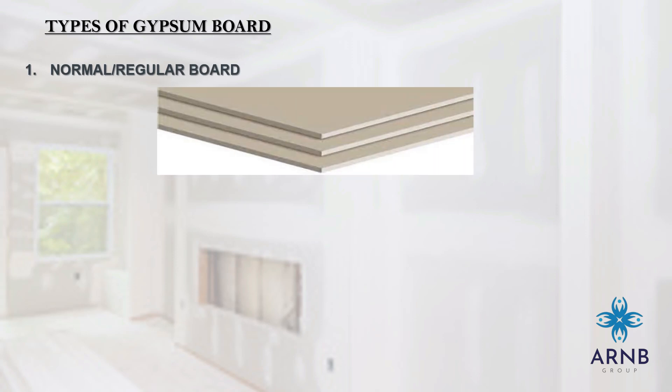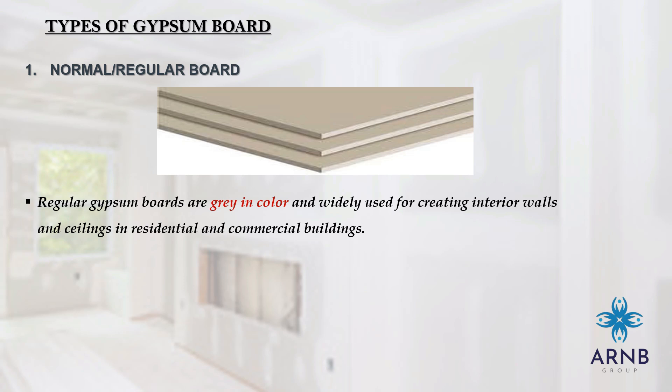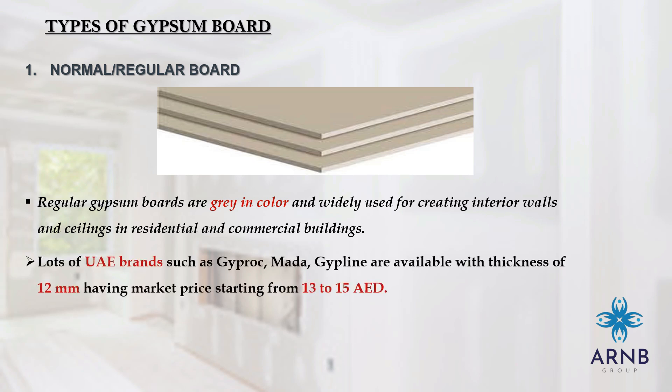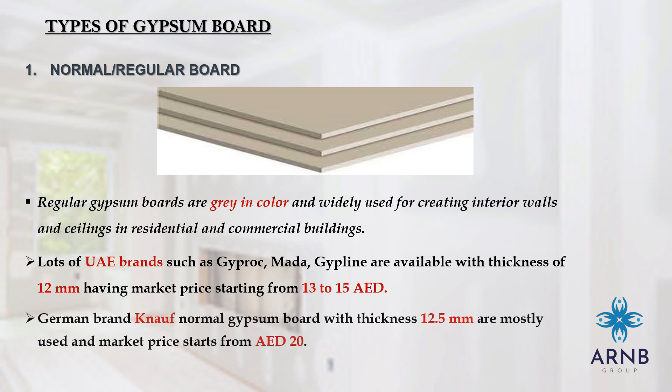The first type is the normal or regular board. Regular boards are grey in colour and widely used for creating interior walls and ceilings in residential and commercial buildings. UAE brands such as Gyprock, Madha, and Gypwain are available with a thickness of 12 mm, with market prices starting from 13 to 15 AED. German-made Knauf normal gypsum board with a thickness of 12.5 mm is mostly used, with market price starting from 20 AED.